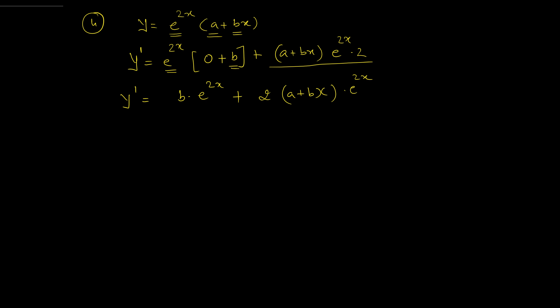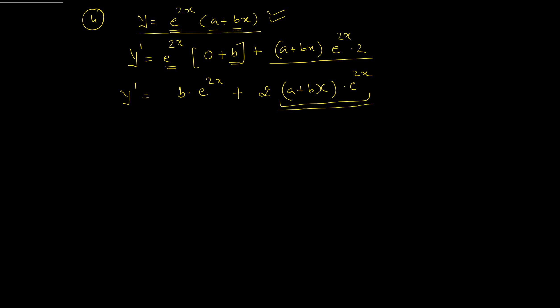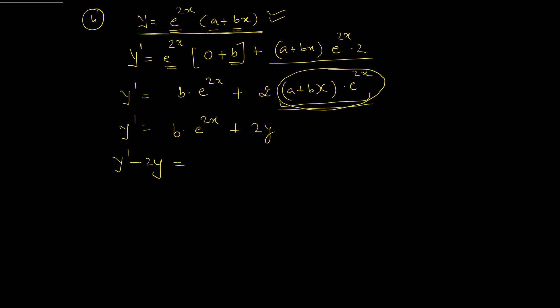So y' = b·e^(2x) + 2y, which gives y' − 2y = b·e^(2x). Rearranging to isolate b: (y' − 2y)/e^(2x) = b. We move e^(2x) to the denominator on the left side so that when we differentiate again, b's derivative becomes zero.